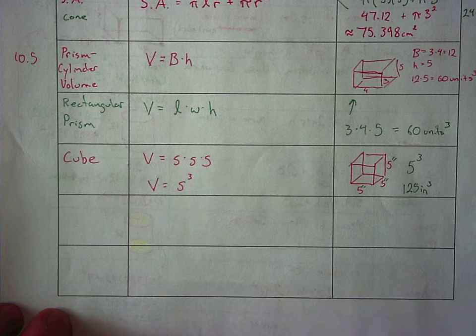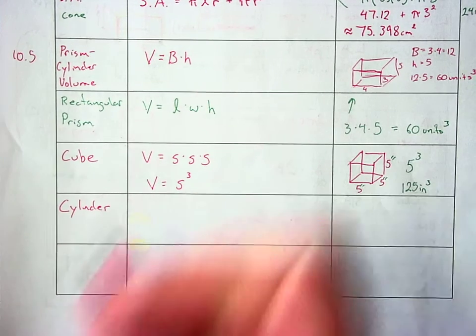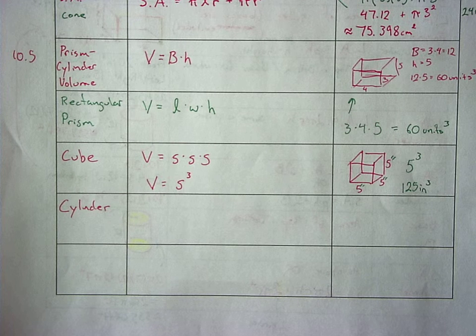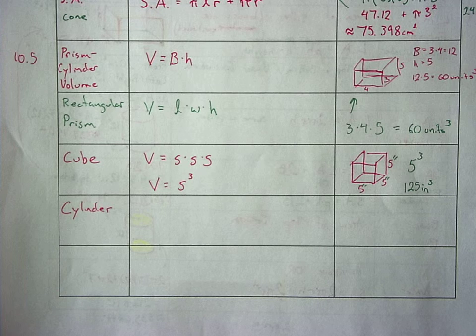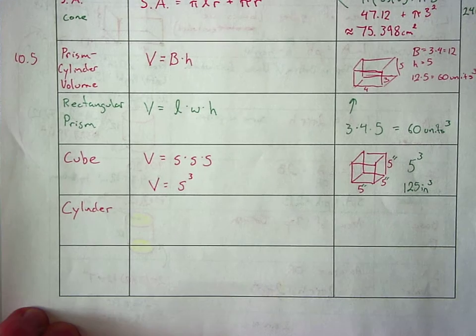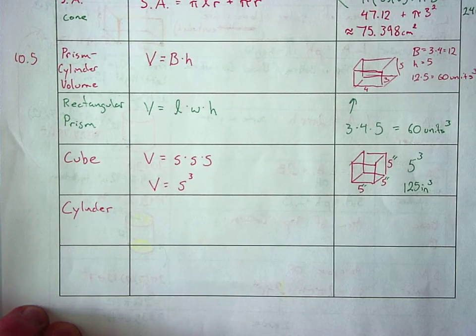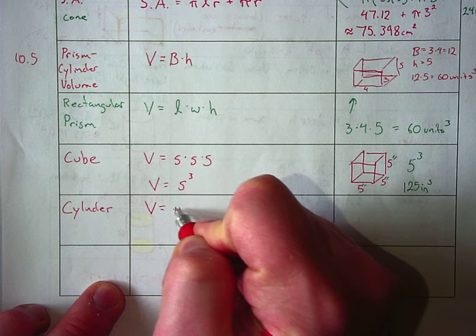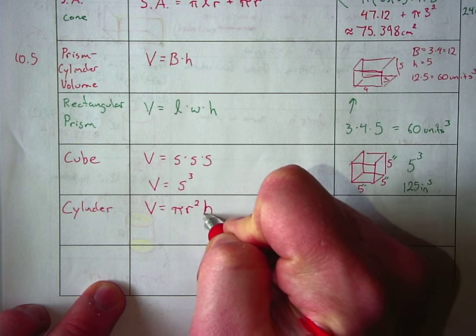The last specific one I want is a cylinder. I think it's kind of silly that the book doesn't do it, well, they kind of do it on the top of page 491, but they don't kind of bold it or make it quite as clear as they could. Base times height. What is the base of a cylinder? Pi r squared. So what's the volume of a cylinder? Pi r squared h.